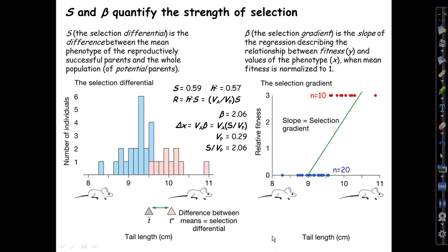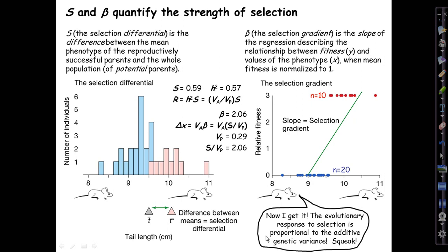That's the selection gradient idea illustrated with this artificial selection experiment. The key point is that the evolutionary response to selection is proportional to the additive genetic variance: delta-x-bar equals Va times beta, where beta is the relationship between phenotypes and fitnesses with fitnesses normalized to a mean of one.